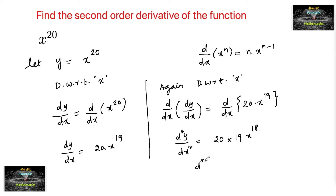So the second order derivative d square y by dx square is equal to 380 times x to the power of 18. So that is the answer.